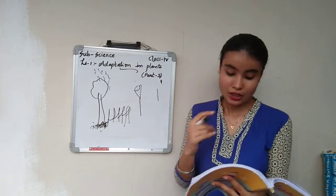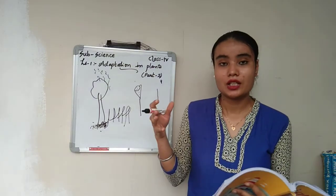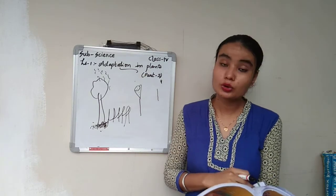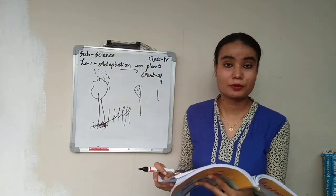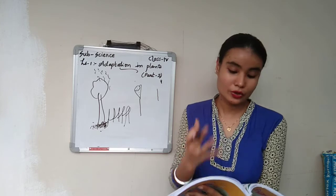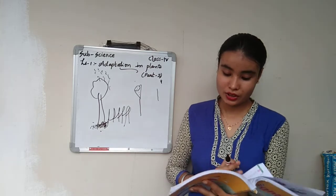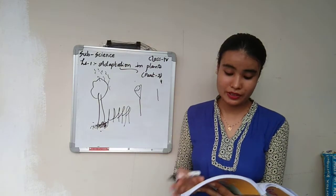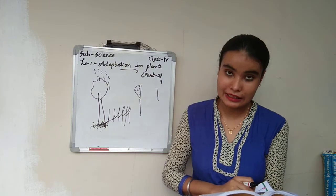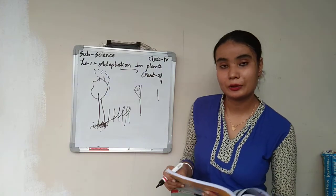In Part 3 we will discuss desert plants, parasitic plants, and insectivorous plants. Till then, go through Part 1 and Part 2. Read the lesson to improve your reading skills. Collect the hard words and underline new words. We will meet again in the next session for Part 3. Till then, goodbye, take care.